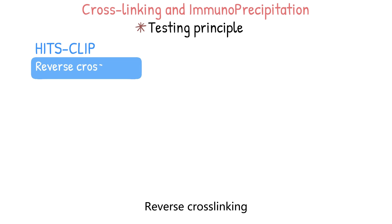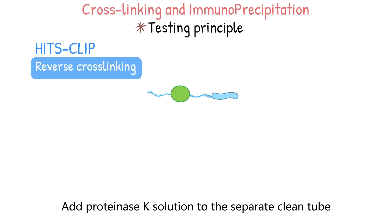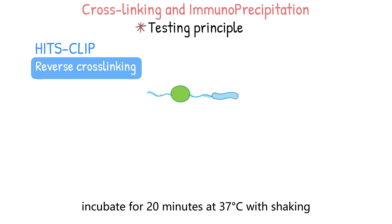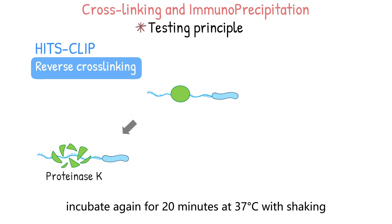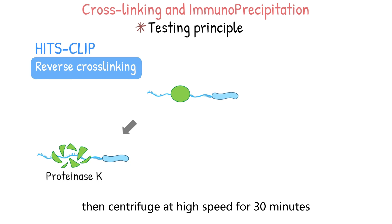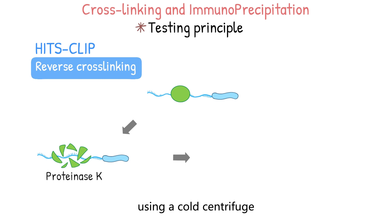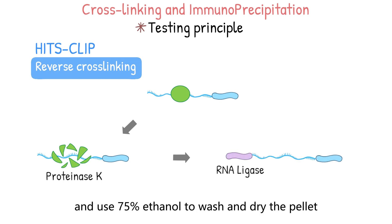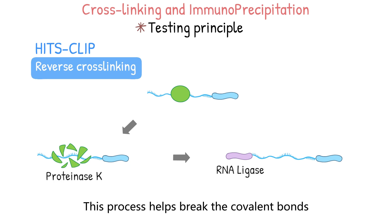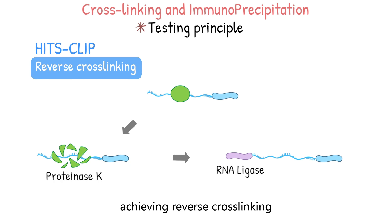Step 7: Reverse cross-linking. Add Proteinase K solution to the separate clean tube, incubate for 20 minutes at 37 degrees Celsius with shaking, add PK/7M urea buffer, incubate again for 20 minutes at 37 degrees Celsius with shaking, then centrifuge at high speed for 30 minutes using a cold centrifuge. Wash the pellet, and use 75% ethanol to wash and dry the pellet. This process helps break the covalent bonds between RNA and protein, achieving reverse cross-linking.